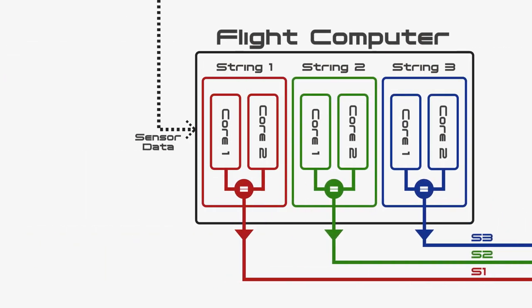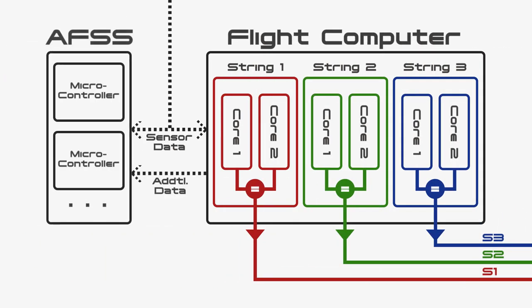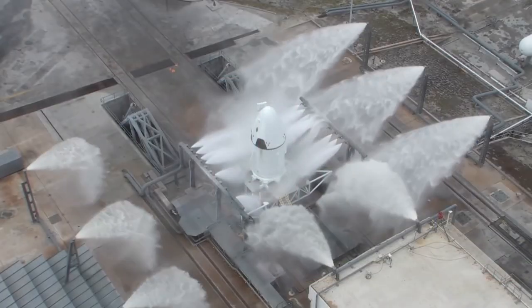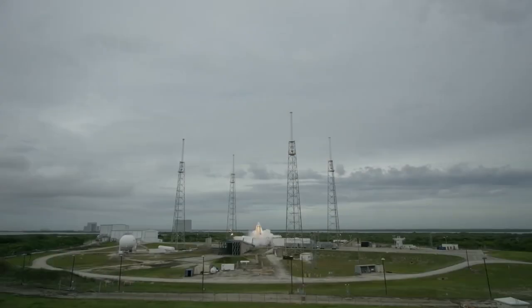One more major system is the AFSS, or the Autonomous Flight Safety System. It's a set of microcontrollers that constantly checks over the data to decide if the flight is still safe. It's separate from the main flight computer, has direct connections to the sensors it needs, and also reads some additional data from the flight computer. This system is responsible for triggering an abort or the flight termination system if the flight becomes unsafe.